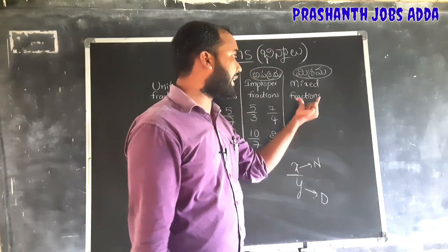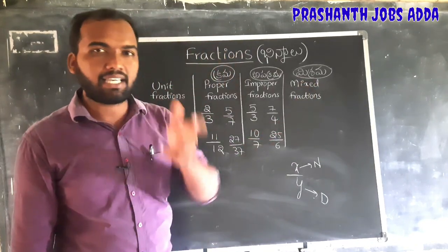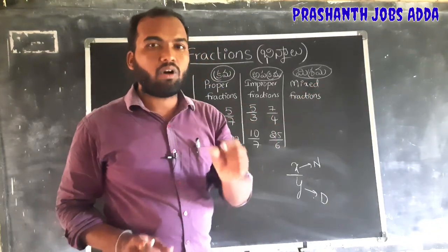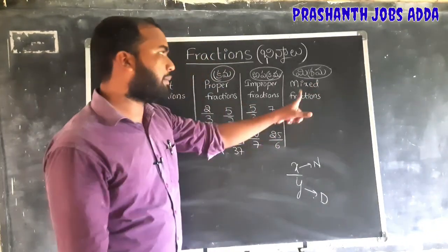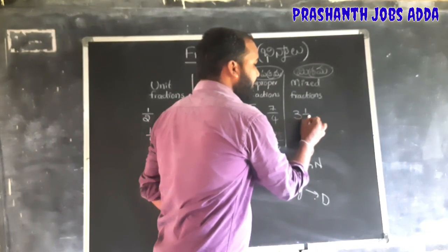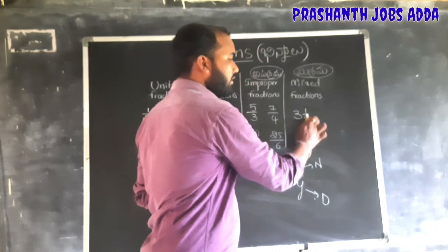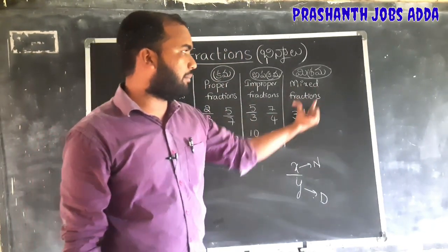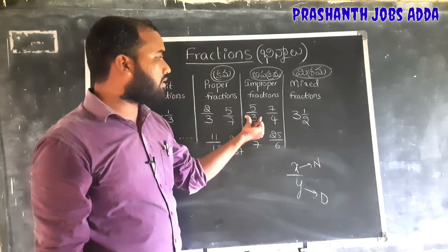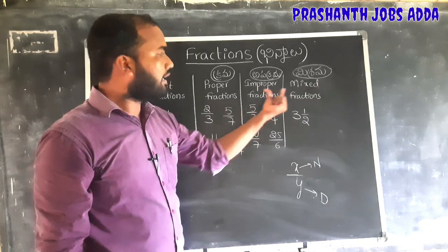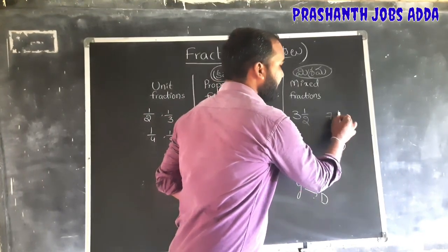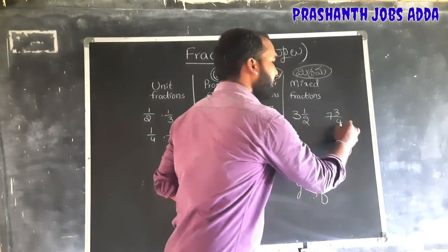Mixed fractions — for example, to convert an improper fraction into a mixed fraction: 7 and 1 by 2, or 7 and 3 by 4. These are examples of mixed fractions. An improper fraction can be expressed as a mixed fraction.